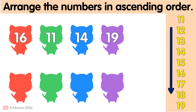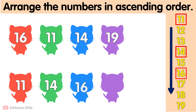So firstly, we need to find the smallest number among 16, 11, 14, and 19. 11 is the smallest number, after that 14, 16, and 19.